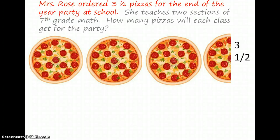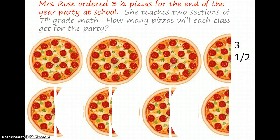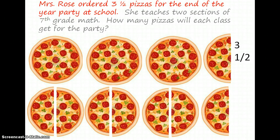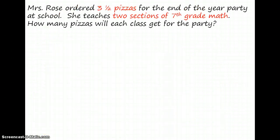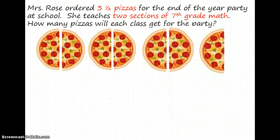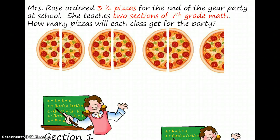So we have three whole pizzas and one half of another pizza — this is a mixed number. We can also look at this as an improper fraction. In this case it is seven halves, so we have seven halves of a pizza. Because there's the same amount of pizza in each, we know that these two numbers are equal. So we have three and a half pizzas, or seven halves, and two sections of math.